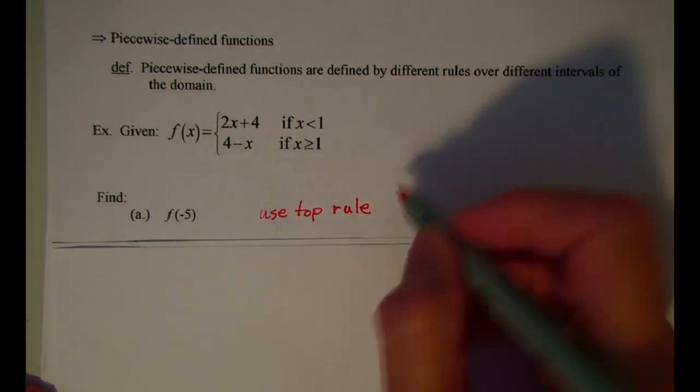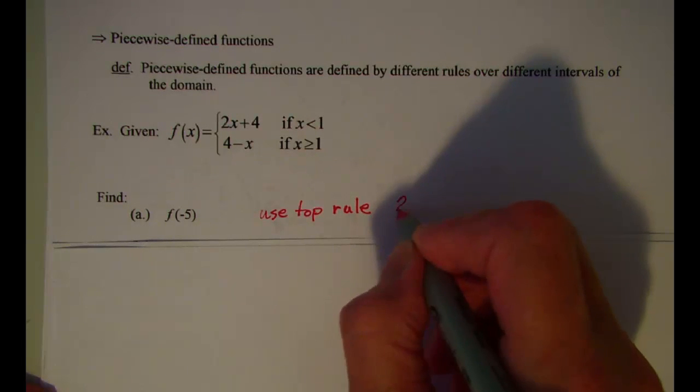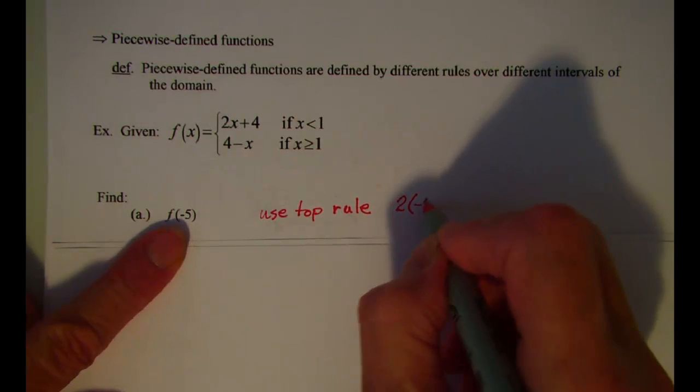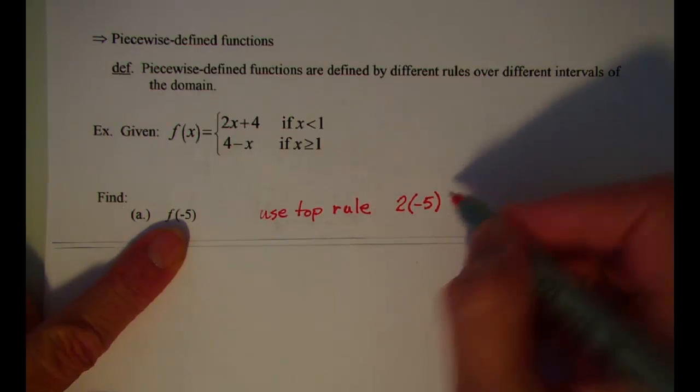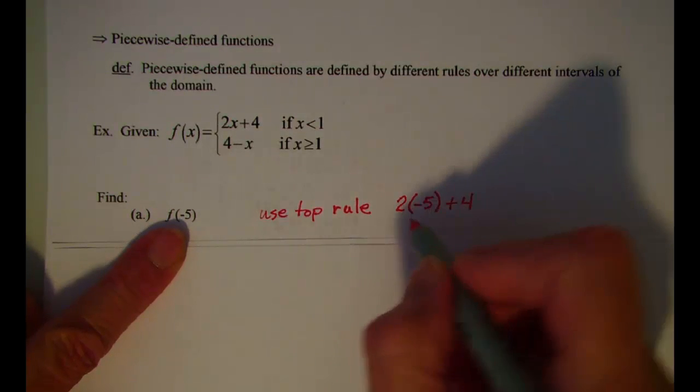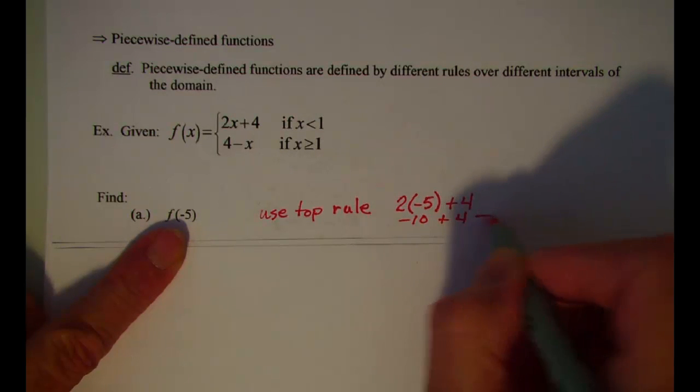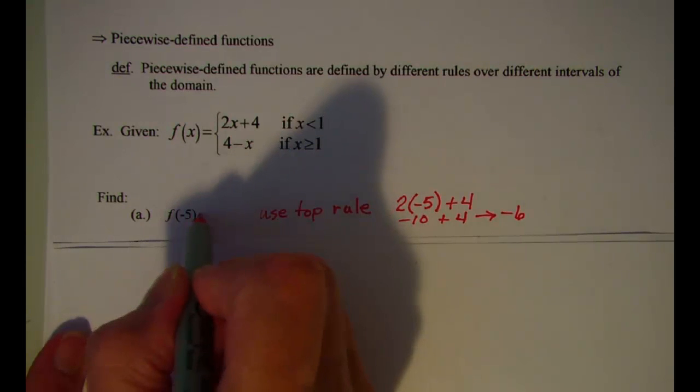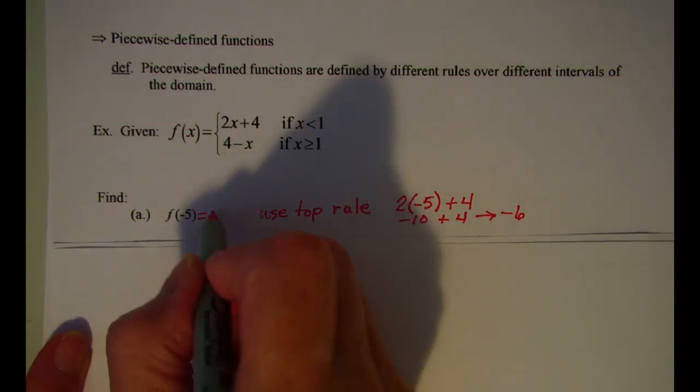And so I know then that 2 times negative 5 plus 4 is my y value. This is negative 10 plus 4, so negative 6. f of negative 5 equals negative 6.